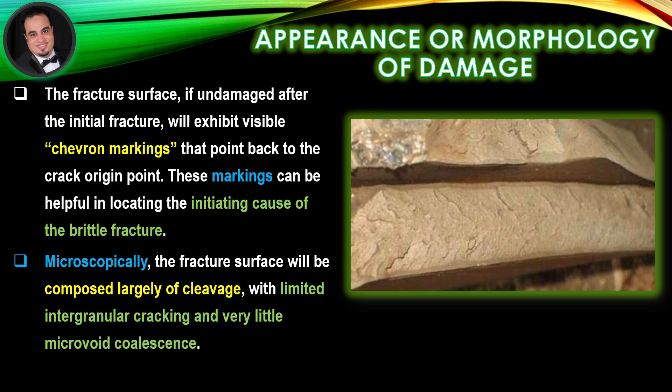A close-up view of the fracture surface from a vessel made of A516-70 plate shows the chevron pattern that points back toward the origin of the crack. Microscopically, the fracture surface will be composed largely of cleavage, with limited intergranular cracking and very little microvoid coalescence.